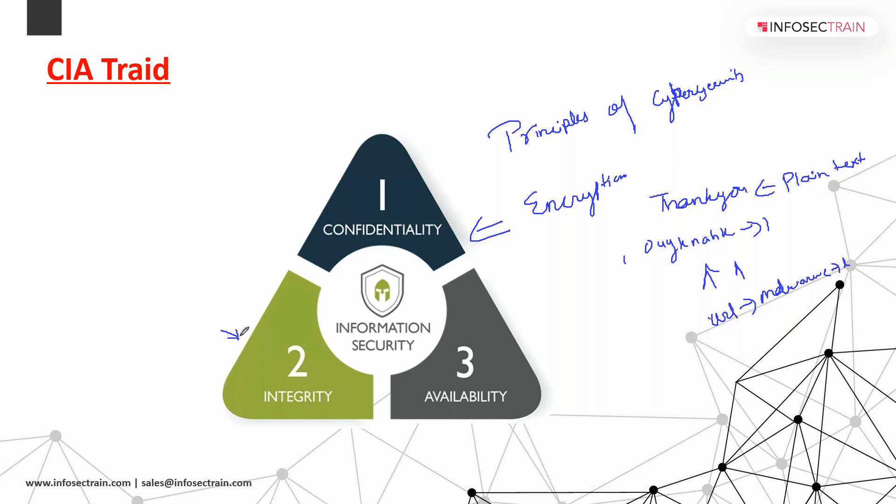Integrity means keeping your organization's information or that message free from errors and without any modification. To maintain integrity we use hashing. With a hash, we change the data into some code — and that code never changes once that particular hash has been created. There is no revert for it.